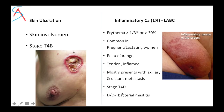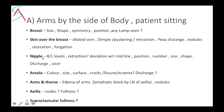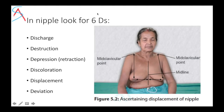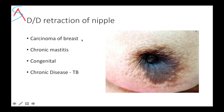The most common differential diagnosis for inflammatory breast carcinoma is bacterial mastitis. Then comment about the nipple: its level, any retraction or deviation, position, number, size, shape, discharge, and ulceration. Look for the 6 Ds of the nipple: discharge, destruction, depression, discoloration, displacement, and deviation. For displacement, measure the distance from the mid-clavicular point to the nipple, and the distance between the nipple and midline, then compare sides.